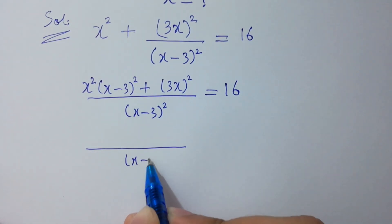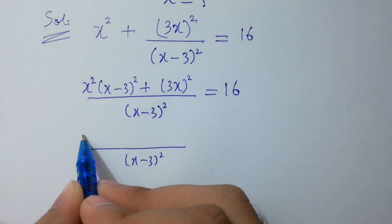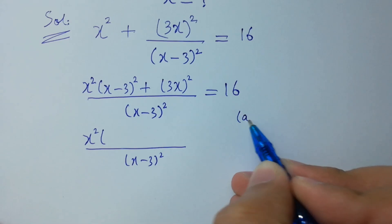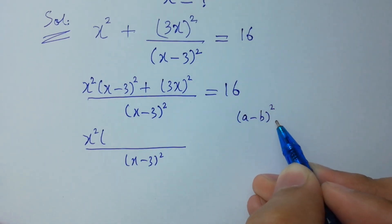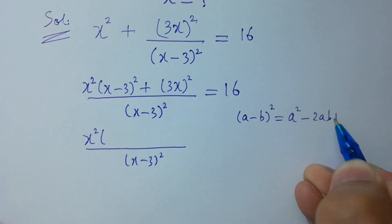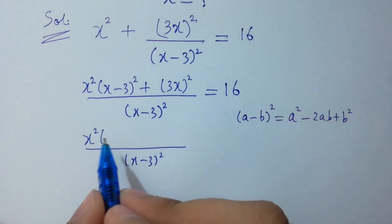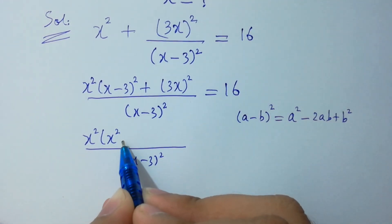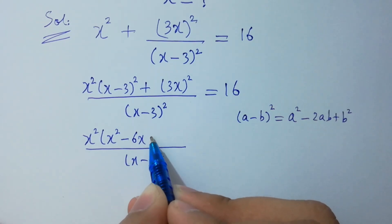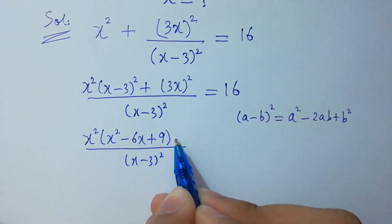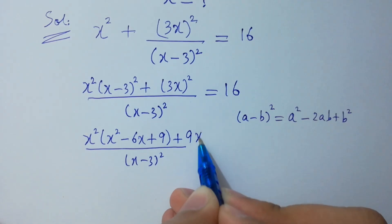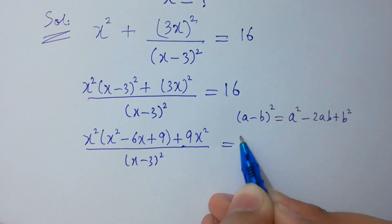Now (x - 3)² — recall that (a - b)² equals a² - 2ab + b². So here we expand: x² minus 2·x·3 equals 6x, plus 3² equals 9. Plus 3x² gives 9x², all equal to 16.